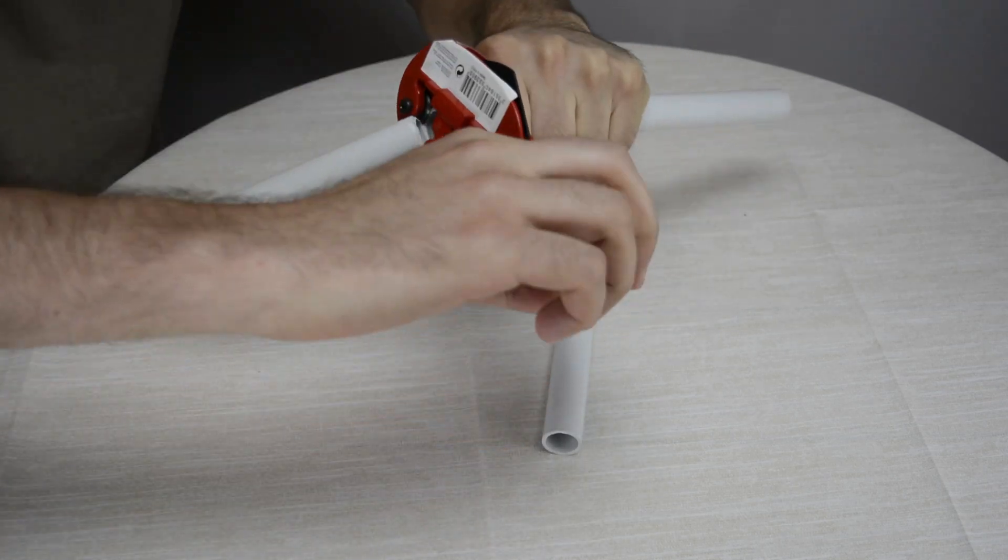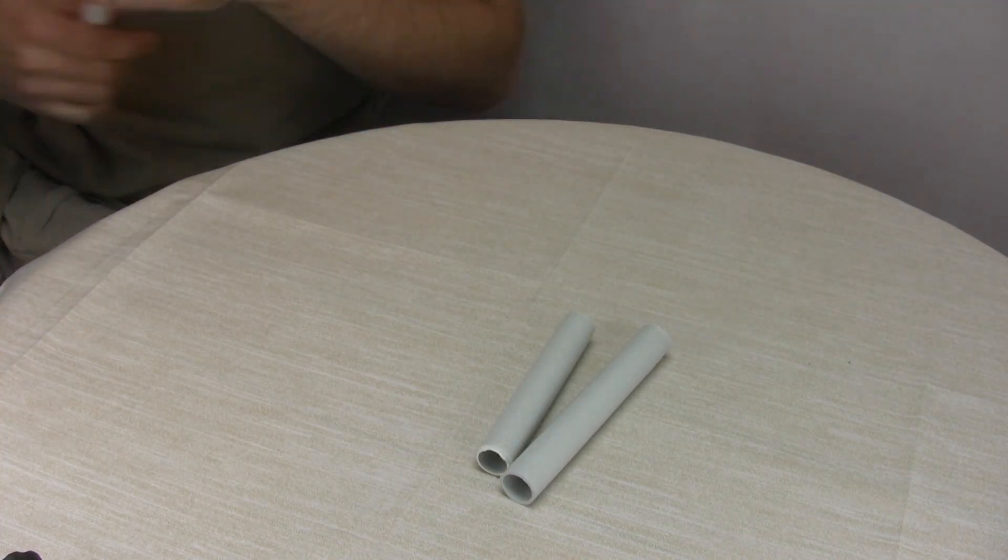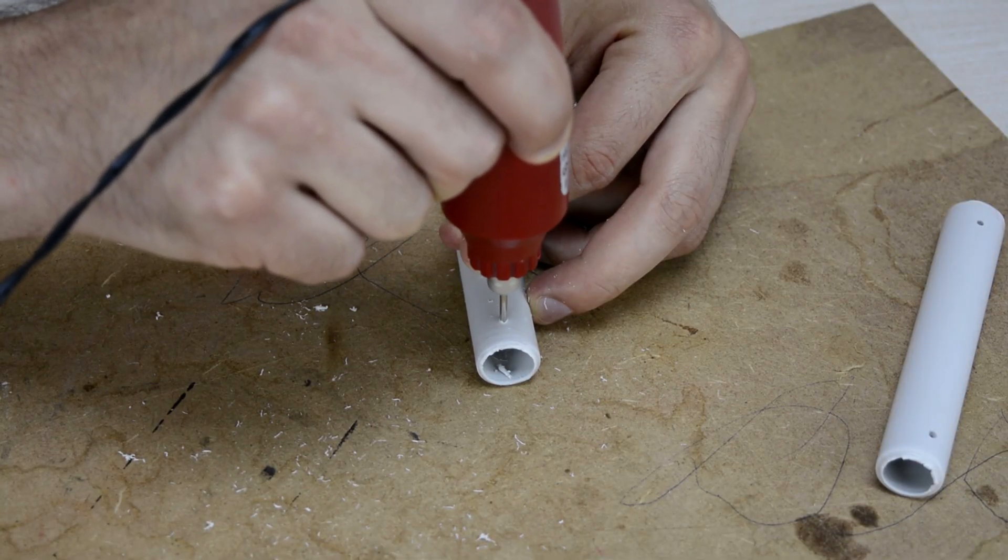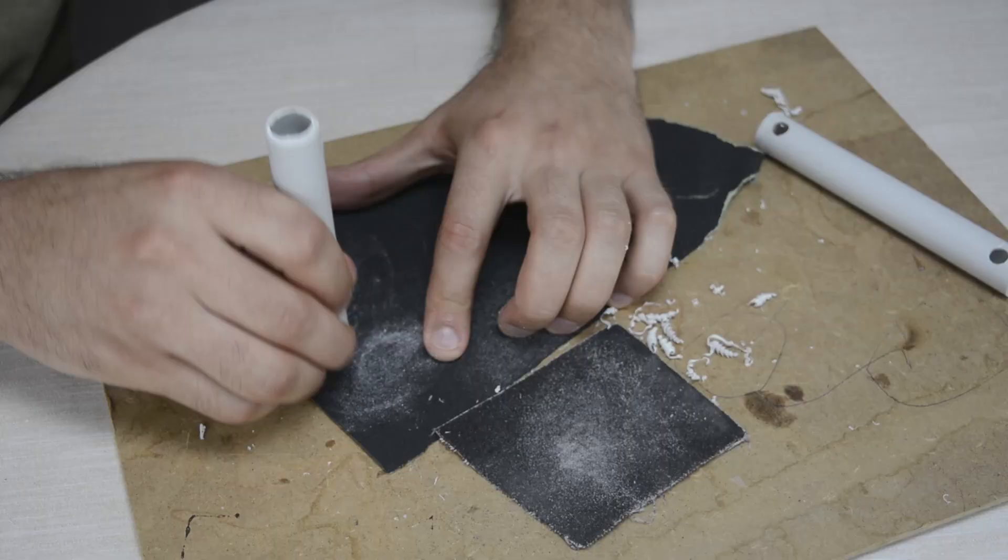Cut two pieces of the plastic pipe. Drill two small and two big holes in each pipe. If you think the pipe looks rough, sand it.